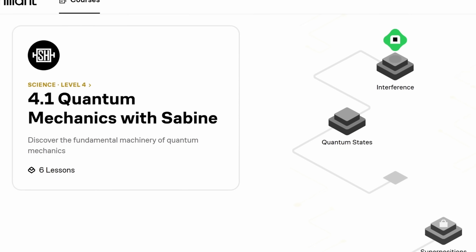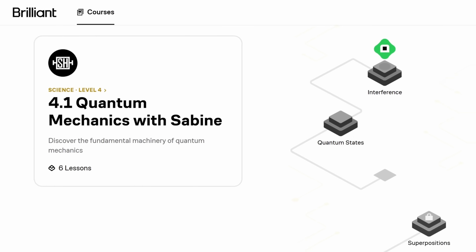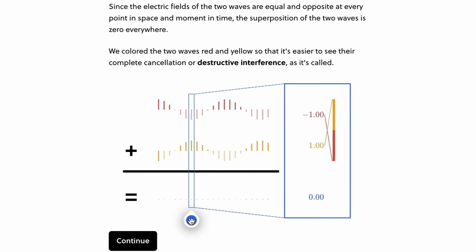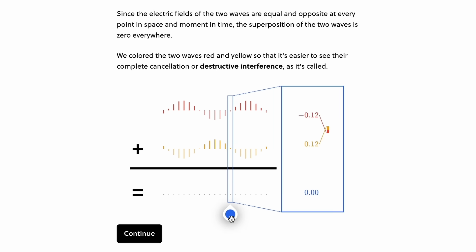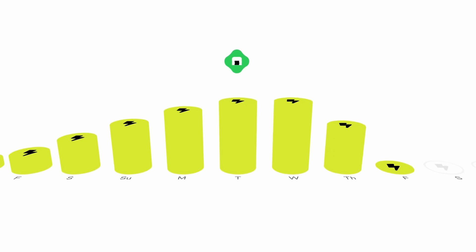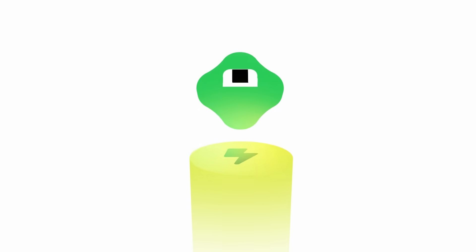I even have my own course on Brilliant. That's an introduction to quantum mechanics. It'll help you understand what a wave function is and what the difference is between superpositions and entanglement. It also covers interference, the uncertainty principle, and Bell's theorem. And after that, you can continue maybe with their course on quantum computing or differential equations.